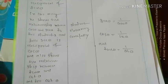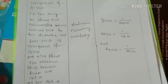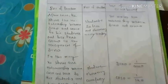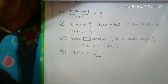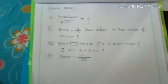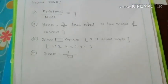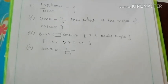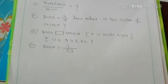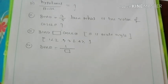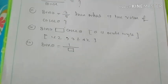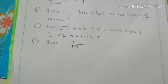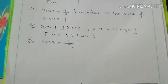Sec theta is also the reciprocal of cos theta. In the blank space: sin theta and cos theta — what will be in the blank space? Sin theta equals 1 divided by cosec theta.